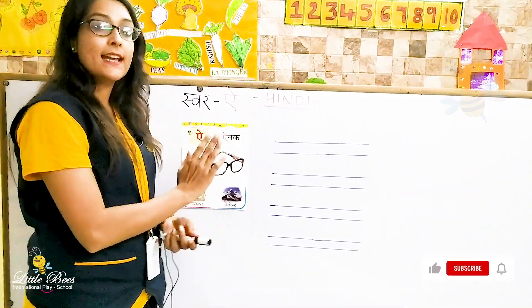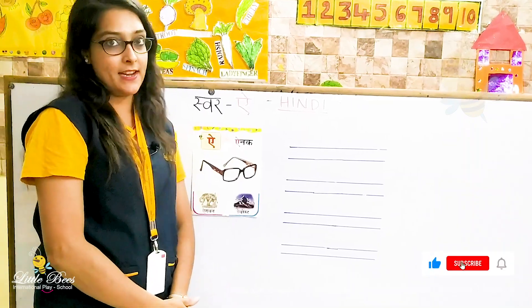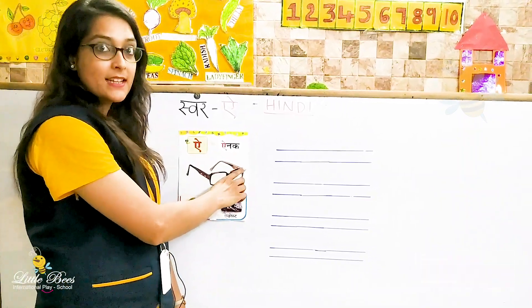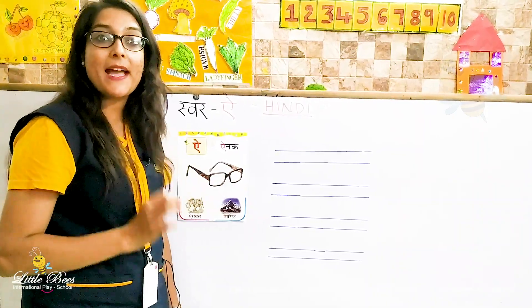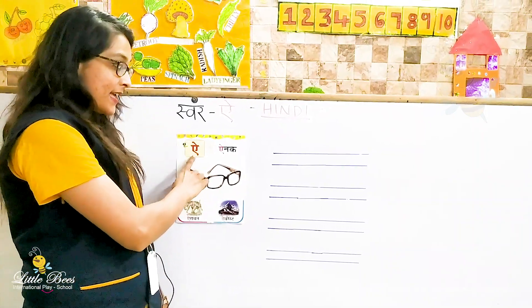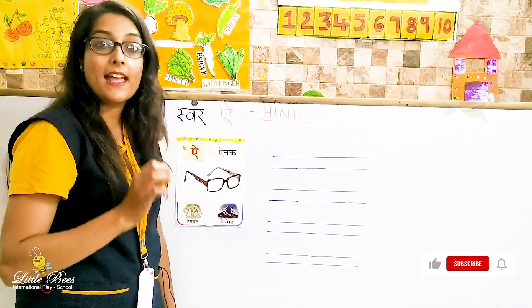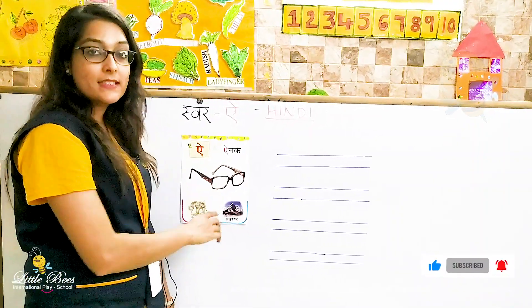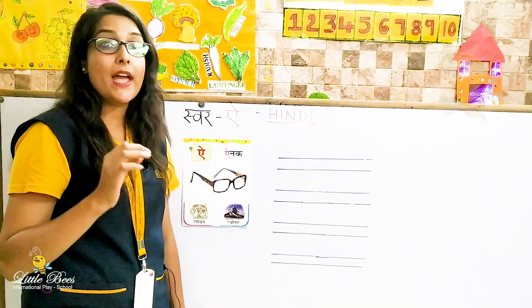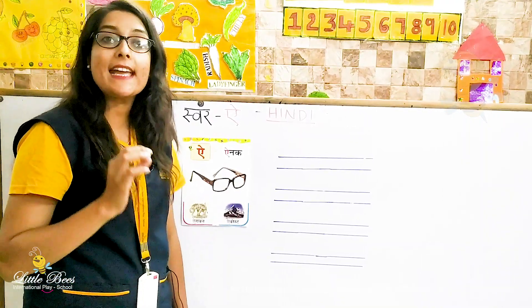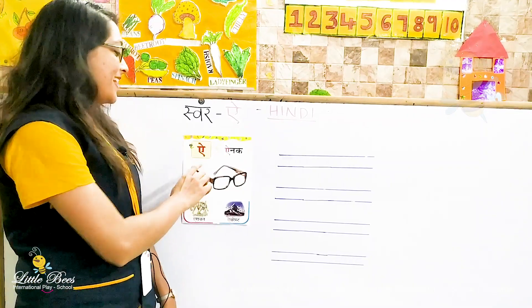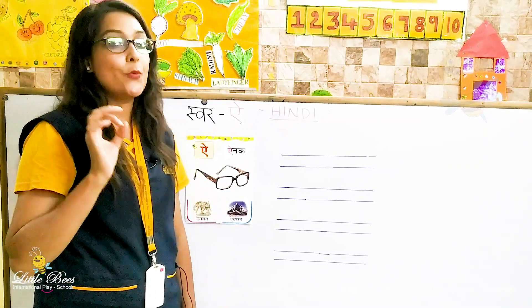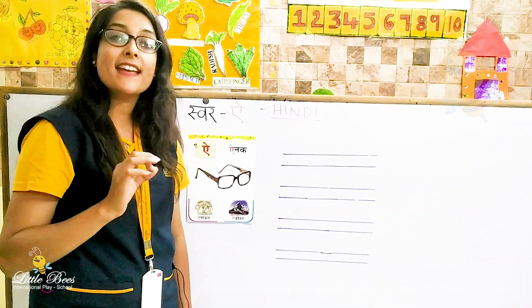So let's see what are the pictures given here. Ae say aynak — aynak means spectacles. Ae say airawat — airawat is a vehicle of Lord Indra.